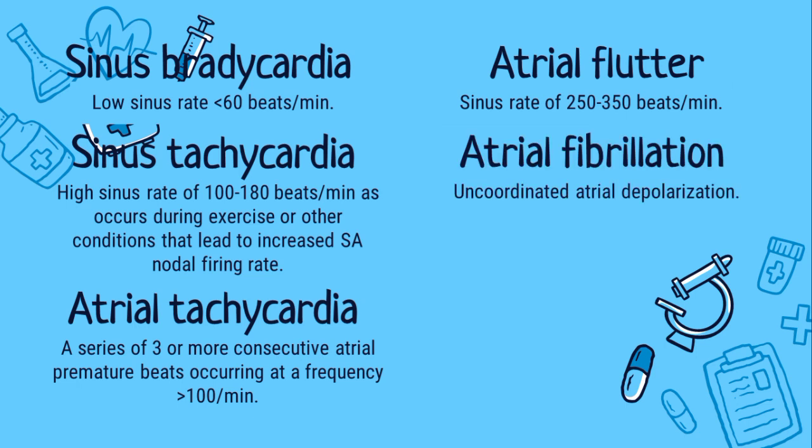Another one is the atrial fibrillation. It refers to very rapid contractions or twitching of the heart muscle, specifically in the atria. The ventricles will then contract more rapidly than normal. However, the rhythm may be either regular or irregular. Most of the time, atrial fibrillation in dogs occurs secondary to heart disease.